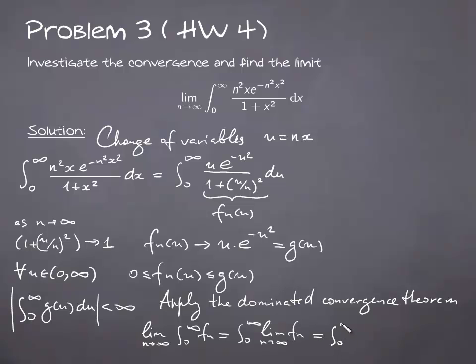The pointwise limit is the function u times e to the power minus u squared, and the value of this integral is 1 divided by 2.